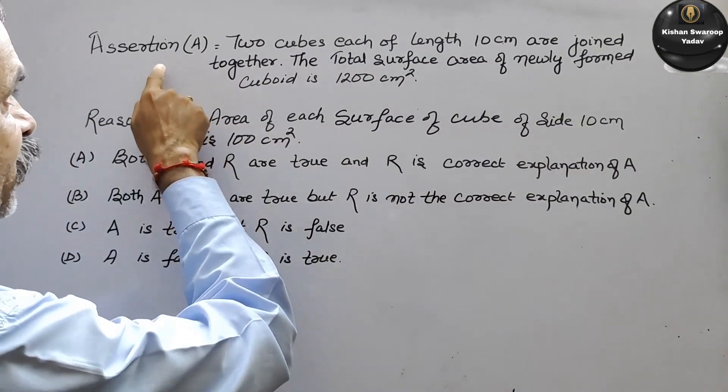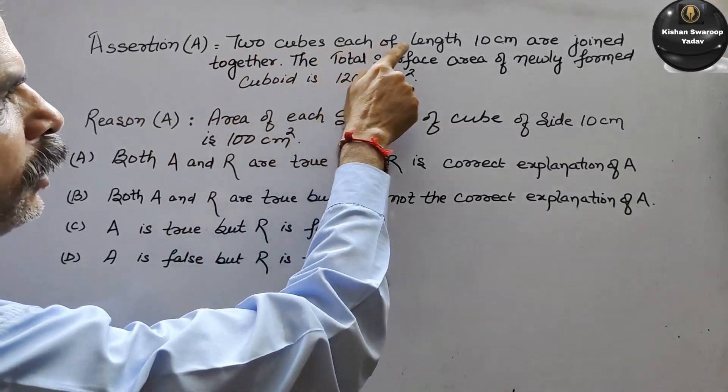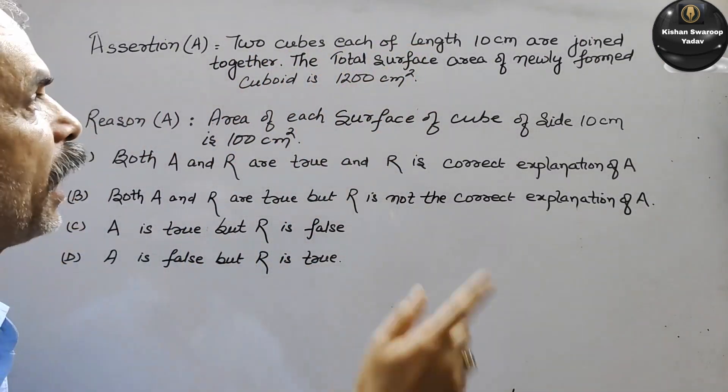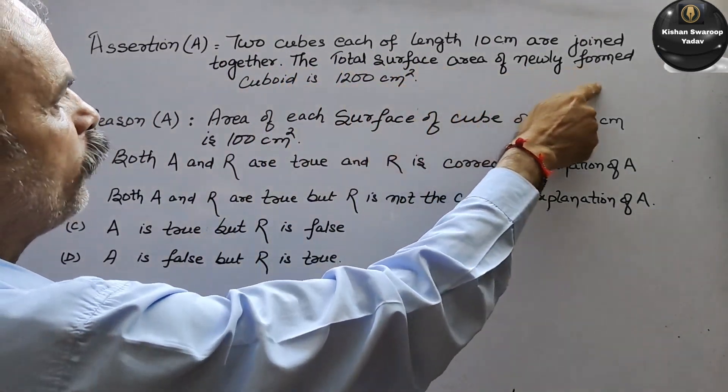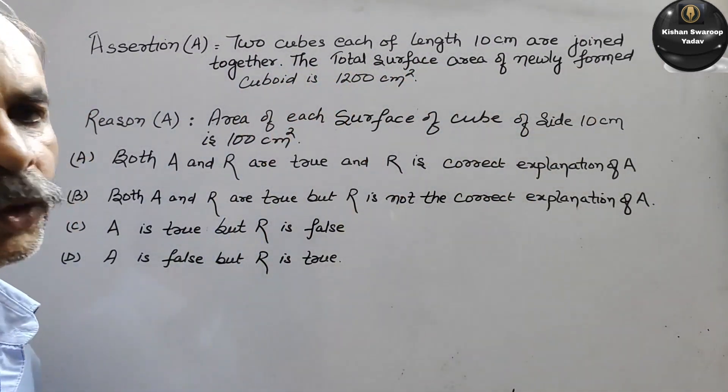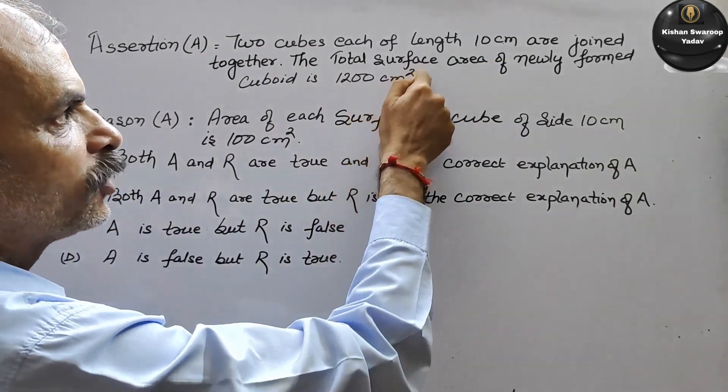Your question is: Assertion - Two cubes each of length 10 cm are joined together. The total surface area of newly formed cuboid is 1200 cm².